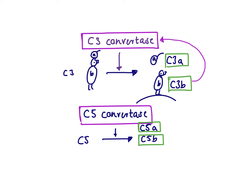Now we need to match those four key effector molecules to the effector functions. C3A and C5A are the ones important for triggering inflammation — A for attractants — they are chemoattractants that stimulate mast cells and trigger inflammation. C5B is the one that initiates the membrane attack complex: once it settles on the bacterial surface, it recruits C6, C7, C8, and C9 to form the pore, allowing extracellular fluid in and killing the bacteria. C3B is the opsonin that helps with opsonization.